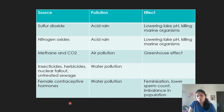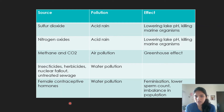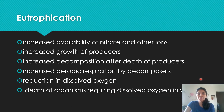Insecticides, herbicides, nuclear fallout, and untreated sewage cause water pollution and eutrophication. Importantly, female contraceptive hormones — which promote production of estrogen, progesterone, LH, and FSH — if they enter a water body, cause water pollution. This can cause feminization of aquatic organisms, lowering sperm counts, creating an imbalance in population with more female organisms than male.